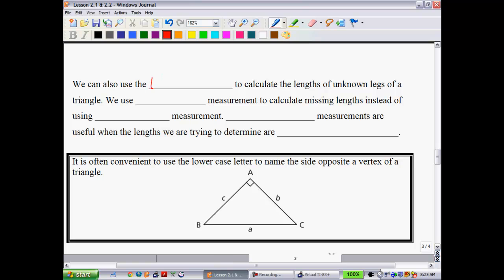So we can also use the tangent ratio to calculate the lengths of unknown legs. A leg is a side of a triangle that we do not know. We sometimes will refer to them as legs. To do this, we use indirect measurement to calculate missing lengths instead of using direct measurement. Direct would be actually physically going and measuring it with like a ruler. Indirect measurements are useful when the lengths we are trying to determine are very large. And it could be actually even the opposite. When they're very small, it's tough to measure and get an accurate reading. Obviously, when they're very large, that's going to be a problem, too.